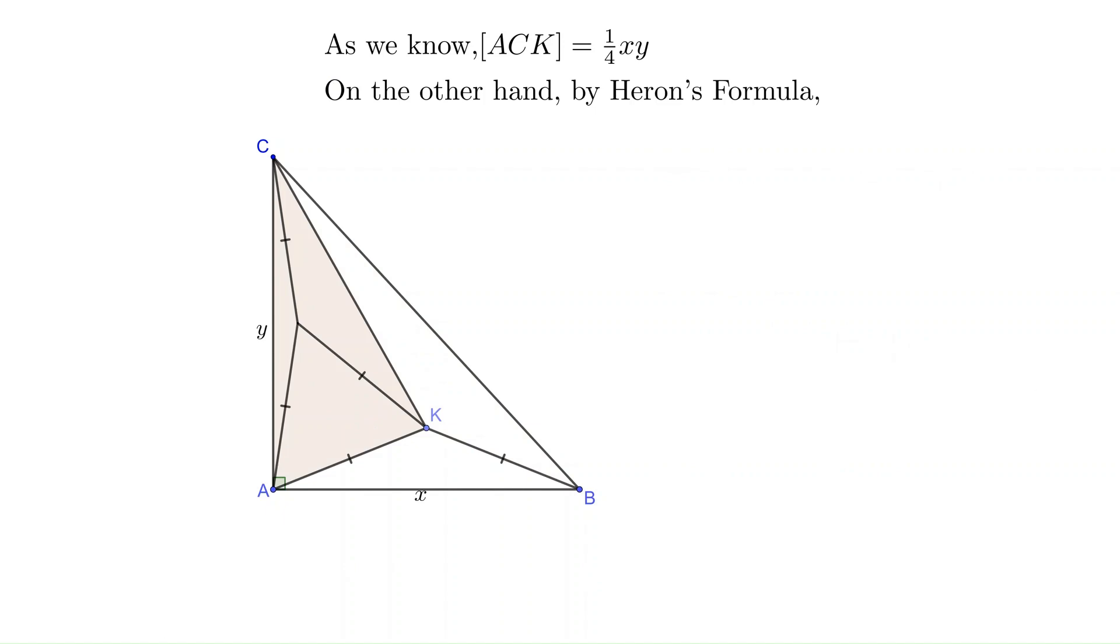There is another triangle ACK, also has an area of 1/4 of xy. What we can do here is to use an alternative way to calculate the area, using Heron's formula. Heron's formula calculates the area of a triangle using the side lengths. We have one here, AC equals y. Another one, AK equals 14. This is a given condition. What about CK? CK is actually equal to AB because of the triangle congruence. So CK equals x. Now we have all three sides of the triangle. We can apply Heron's formula.